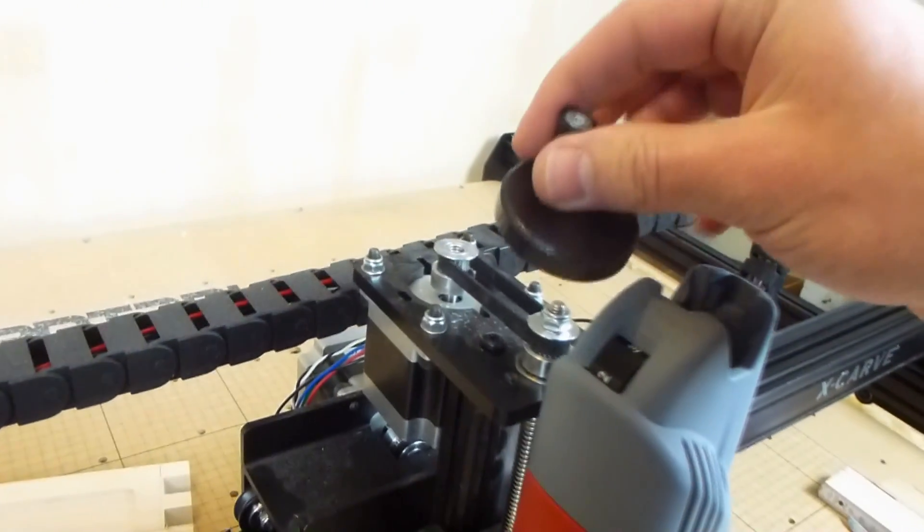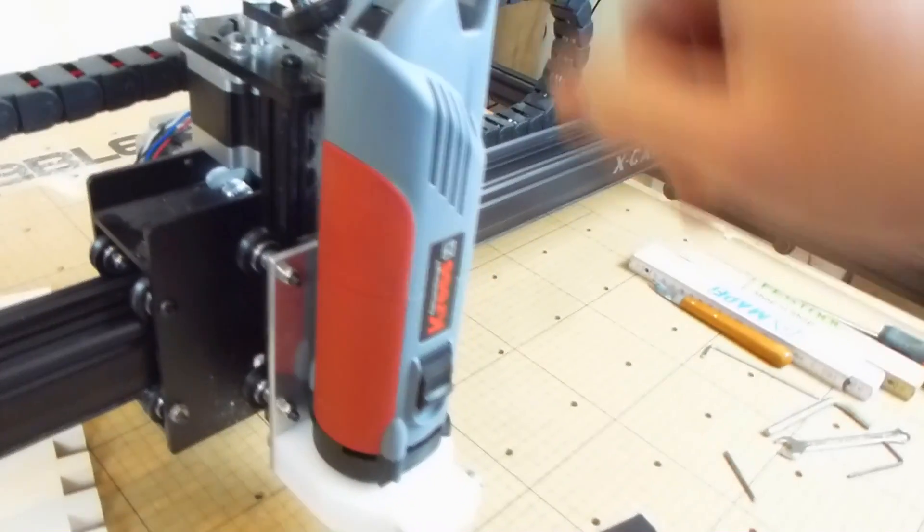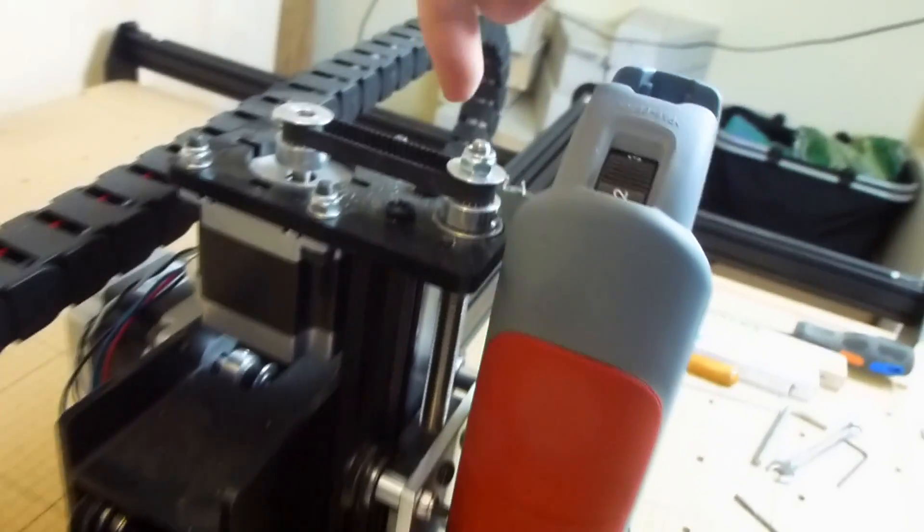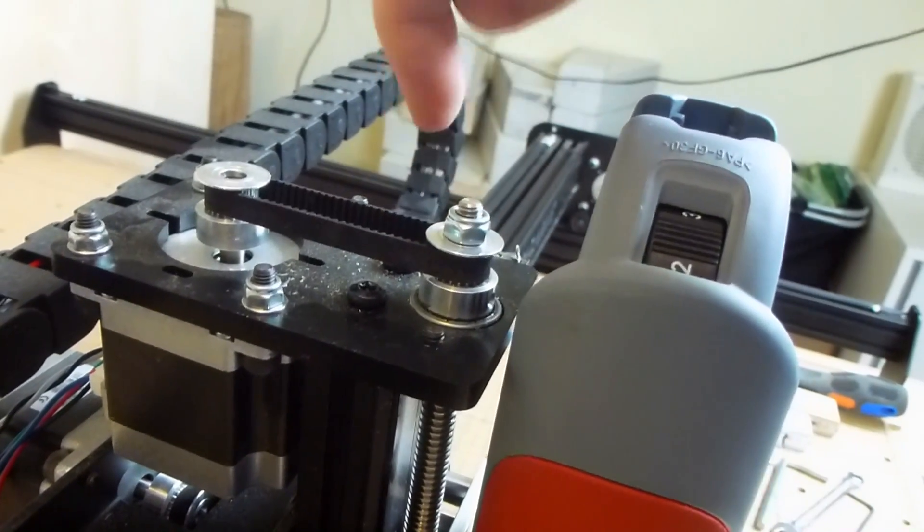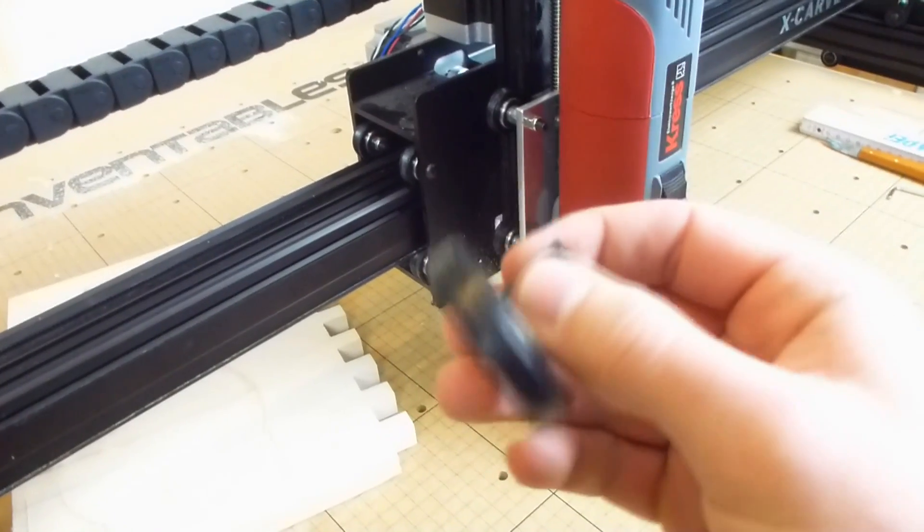One problem I ran into is that my little crank here doesn't fit anymore because the spindle is so tall. So as a first little project I think I am going to make a new smaller one, but this time just a nut, not a whole crank with a handle like this one.